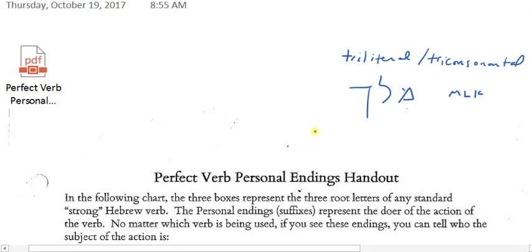So we use certain vowels with that pattern, and we get a word associated with this idea of kingship, Melek. We change the vowels to other vowels and maybe add some prefixes and suffixes.